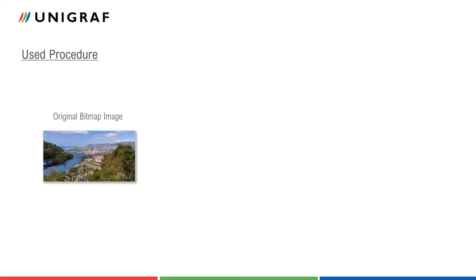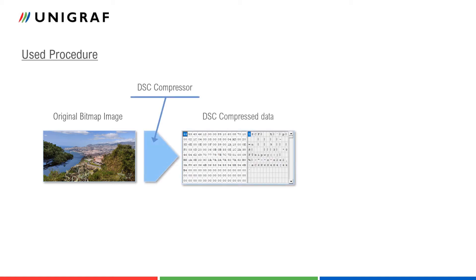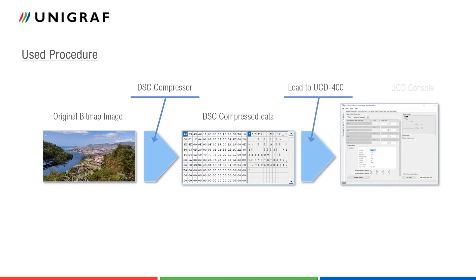The procedure we will be using today starts with a bitmap image as our test image. Using the DSC-Compressor tool, we will convert it to a DSC-Compressed file. We will load the file to UCD-400 test equipment using UCD-CONSOLE, and then use UCD-CONSOLE's pattern generator to start sourcing our DSC test content.